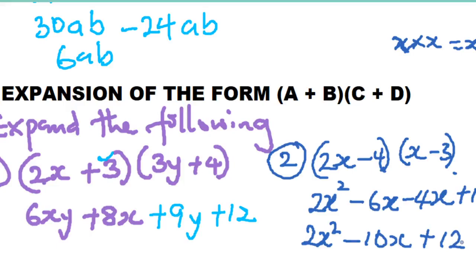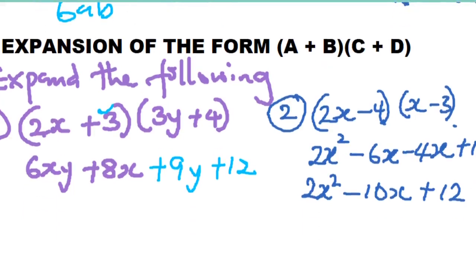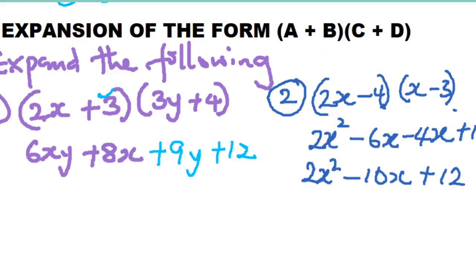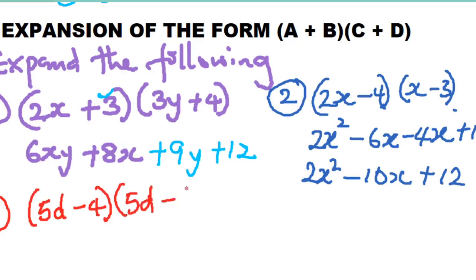Very simple — just take it step by step and you won't make a mistake. Let's go to example three. We have (5d − 4)(5d − 6). There are two terms, 5d and minus 4, that will do their work on (5d − 6). There's nothing in between, so all of the first bracket multiplies the second.